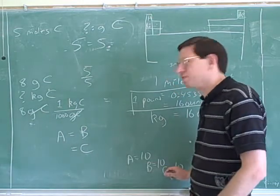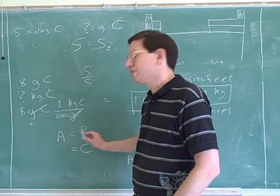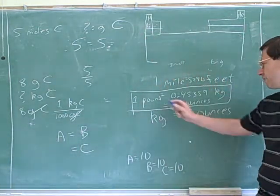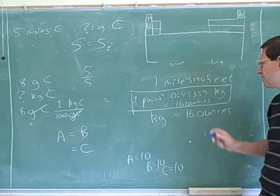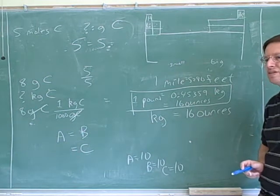Doesn't that mean that B equals C? Isn't this just a way of telling us that B equals C? B equals C, right? So how many kilograms? If one pound is 0.4539 kilograms and one pound is 16 ounces, how many kilograms are equal to 16 ounces?